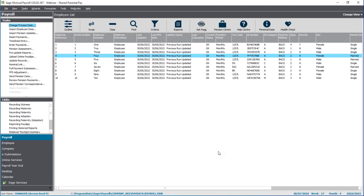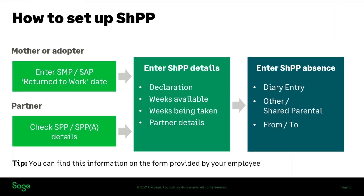Here's a quick recap of the setup process. Starting with the partner: check the SPP or SPPA details if it's an adopted child. From that section, go into the shared parental pay option, tick the box to confirm you've received the declaration, and confirm the weeks available and weeks being taken. Provide the partner details — all of this should be on the forms provided by the employee. The third step is to enter the absence, either using the diary entry option or by clicking and dragging dates on the diary, choosing shared parental as the type and ensuring the correct from and to dates.